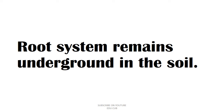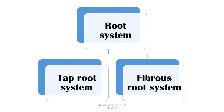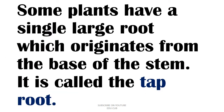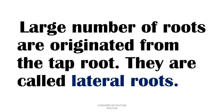Normally the root system remains underground in the soil. There are two types of root system: one is the tap root system and the second is the fibrous root system. Some plants have a single large root which originates from the base of the stem — it is called the tap root. A large number of roots are originated from the tap root.